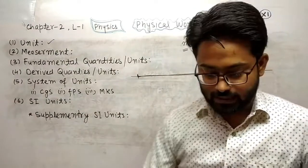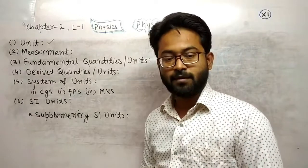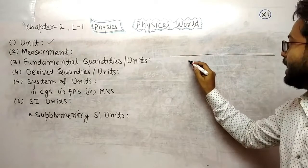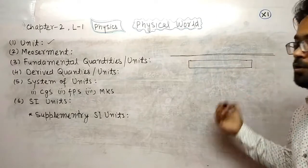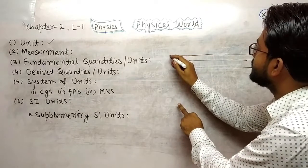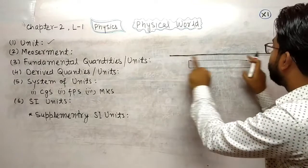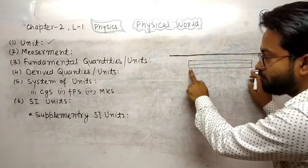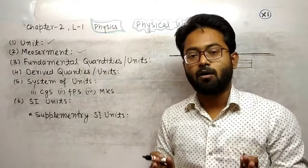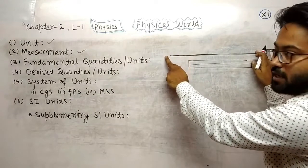Next point is: what is measurement? Measurement is nothing but comparison. If you need to measure the length of a line and you have a scale, you will compare this line with the scale. This comparison of a standard quantity or fixed quantity with an unknown quantity of the same type is called measurement.